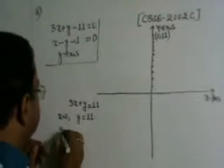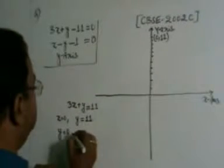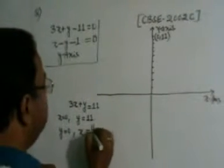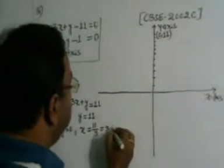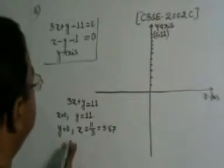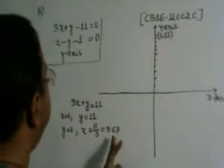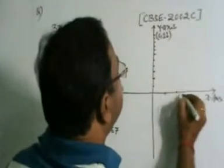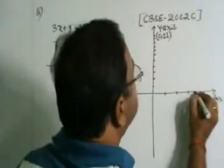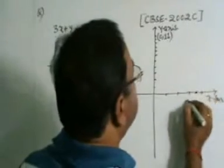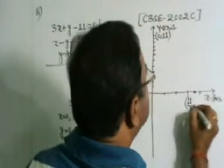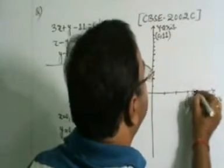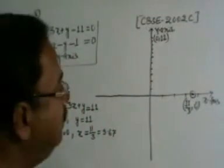And second, we put y is equal to 0. Is mein y is equal to 0 put karenge, toh 3x is equal to 11. And therefore, we have x is equal to 11 by 3, which is equal to 3.67. So, y is equal to 0 and x is equal to 3.67. So, this is 1, 2, 3, 4. So 6, 7 kahin yahan hoga. So, this is 11 by 3, 11 by 3 and 0. Yeh jo point hai, yeh hoga. Yeh hoga humara, 11 by 3 and 0.